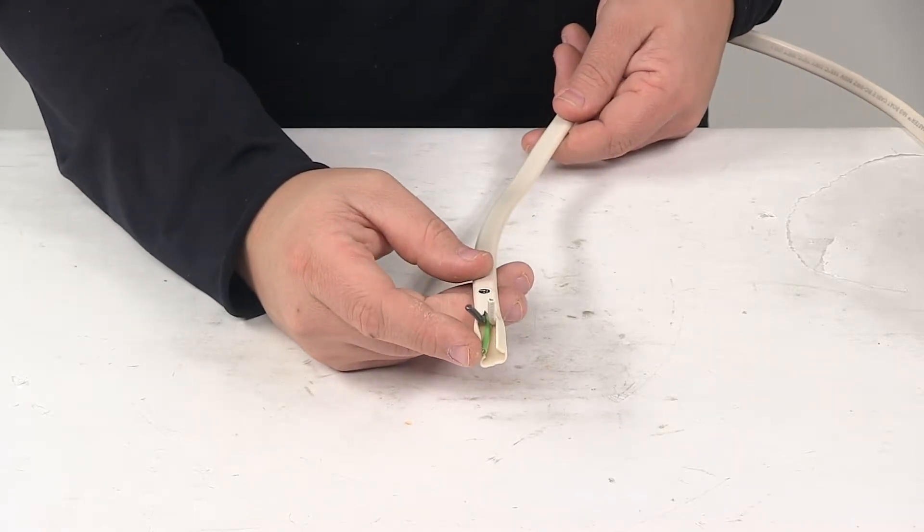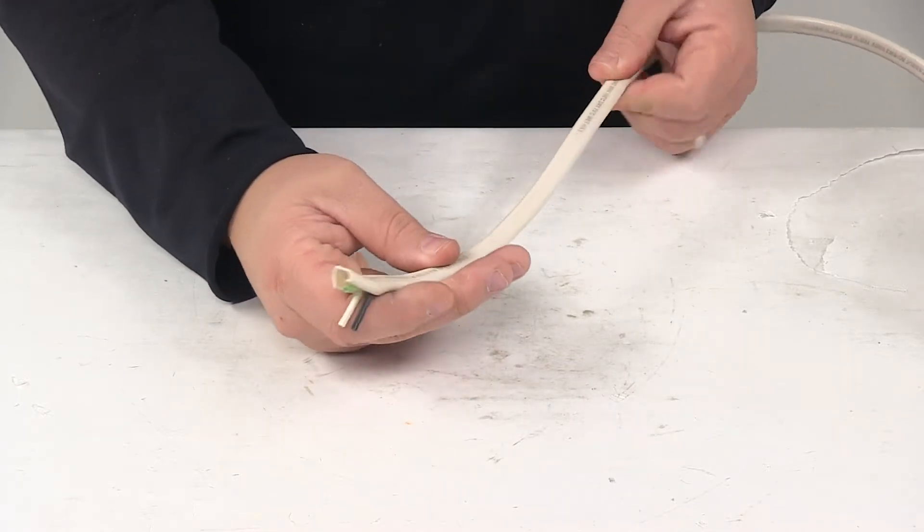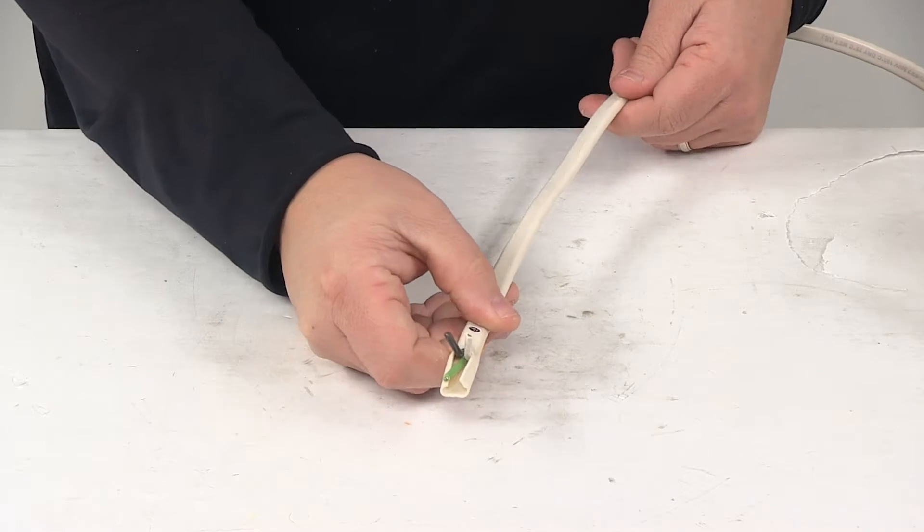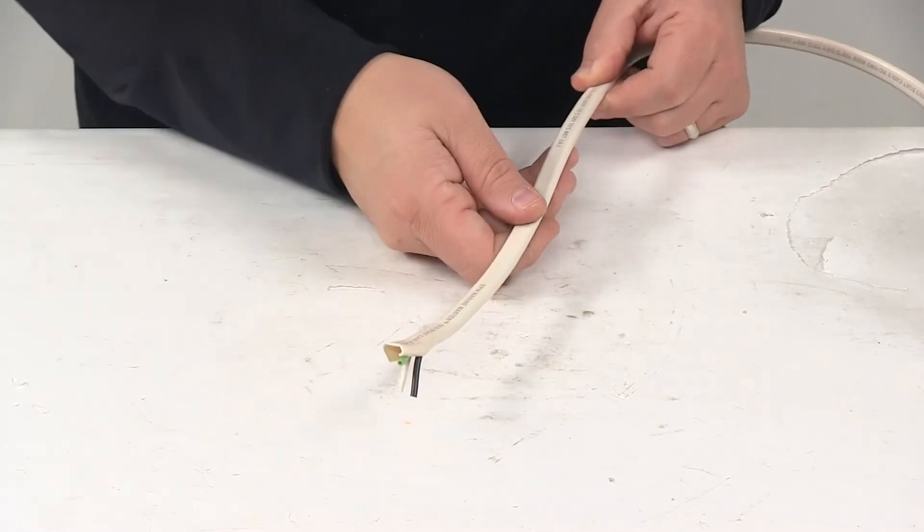Wire gauge is 16. Maximum power rating is 600 volts and the operating temperature is 105 degrees Celsius dry to 75 degrees Celsius wet.